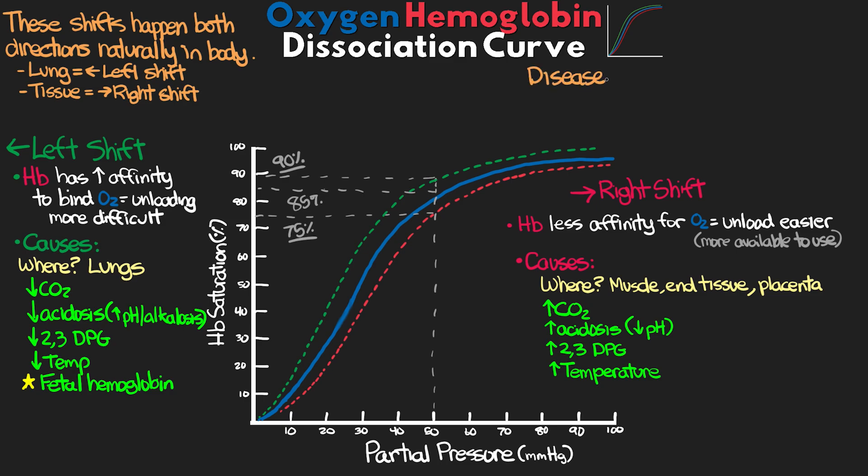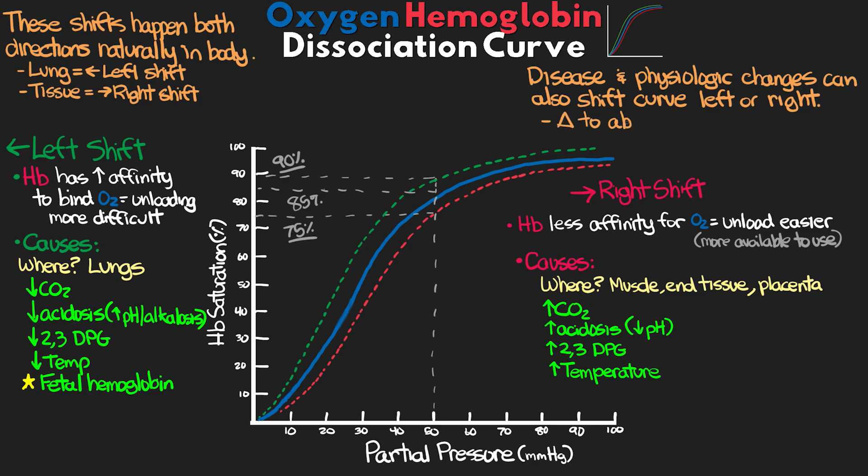Various disease processes and changes to our patient's physiology can also shift these curves further one way or the other, impacting the patient's ability to either release oxygen or bind it in the first place. For example, if someone is extremely acidotic systemically, hemoglobin will have less affinity for oxygen in the lungs where we want it to bind, potentially impairing oxygen delivery. Another example: a septic patient in metabolic acidosis due to an oxygen imbalance at the tissue — if we correct their acidosis, we shift the curve left, making it harder for oxygen to unload at the tissue where it's desperately needed.